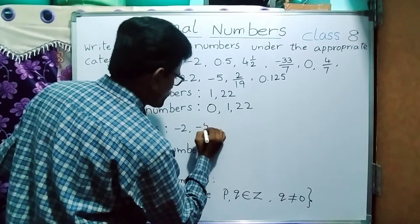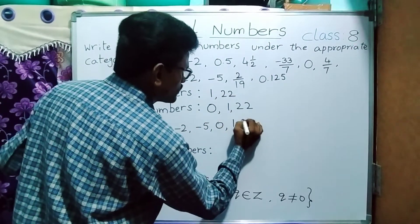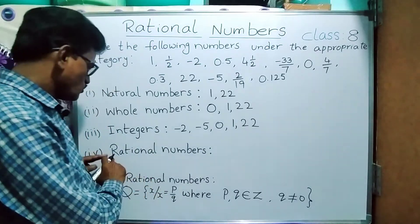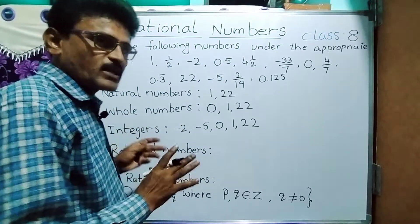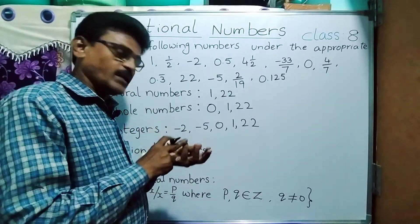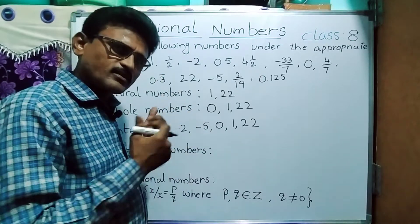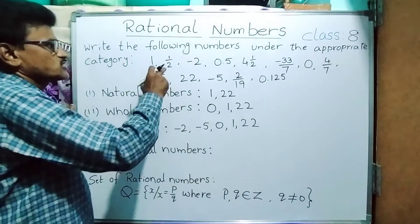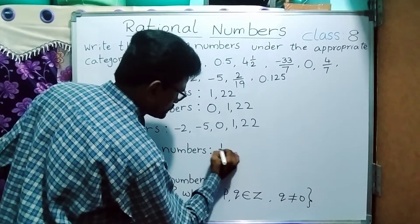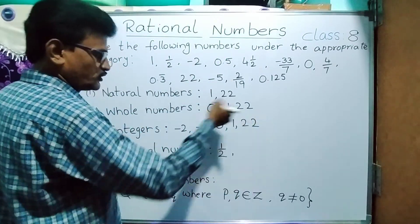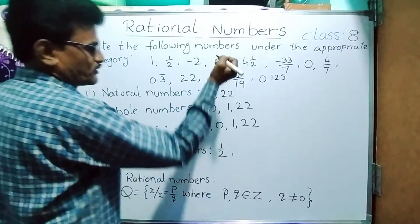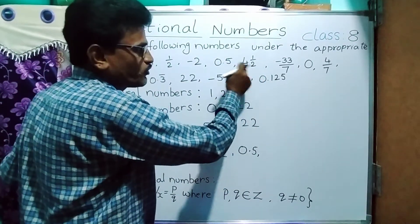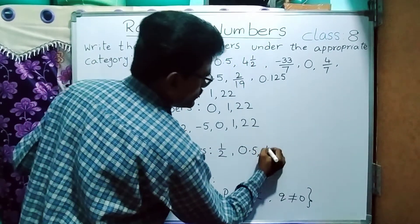For integers, negative numbers are also included. From the list, minus 2 and minus 5 are negative integers. So integers from the list are: minus 5, minus 2, 0, 1, and 22. Note that minus 33 by 7 is a rational number in p by q form, so it does not count as an integer here. For rational numbers: all the integers come into the rational numbers list, and additionally p by q form numbers like 1 by 2, 0.5, and 4 and a half written as 9 by 2 are also rational.